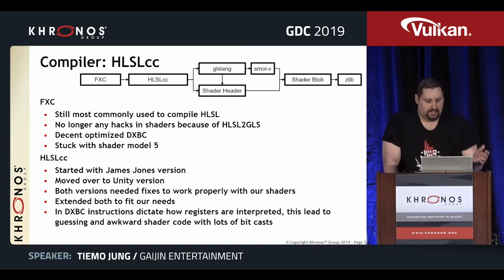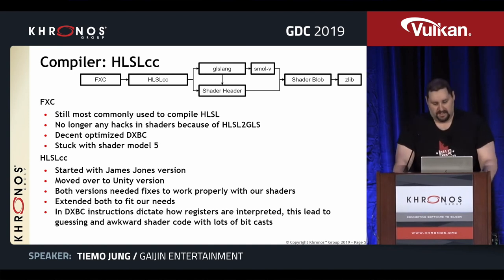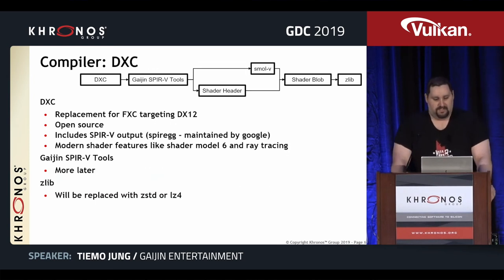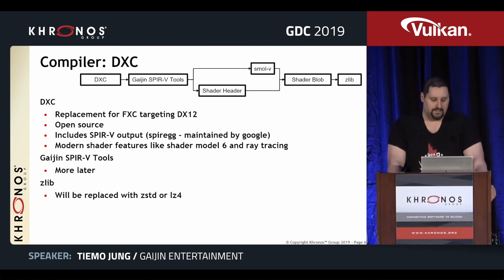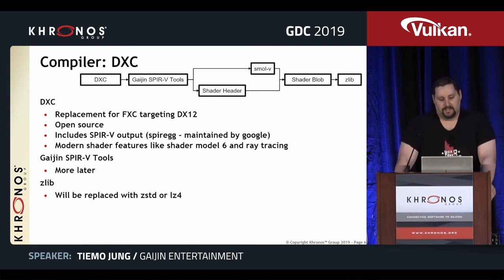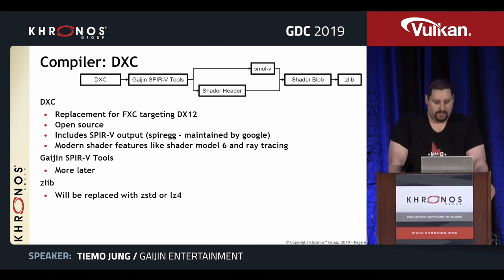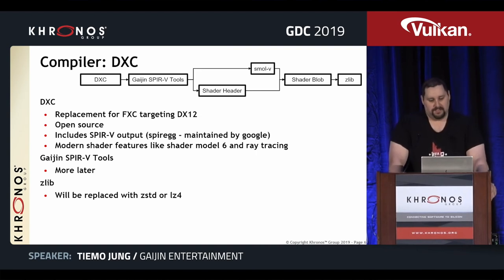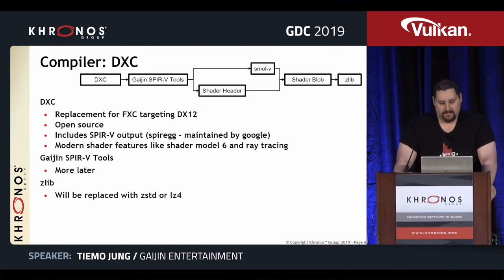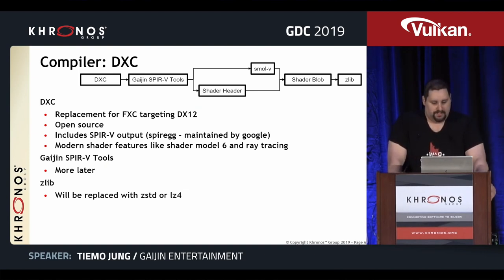We still use it, but we are in the process of moving to a newer solution, which is DXC. DXC is the new standard for compiling HLSL shaders for DX12. It's open source and has a native SPV backend from Google. We are currently in the process to move over and have some custom tools to process the final SPV from DXC and modify it to work with our renderer.